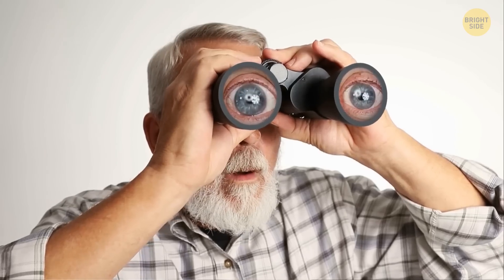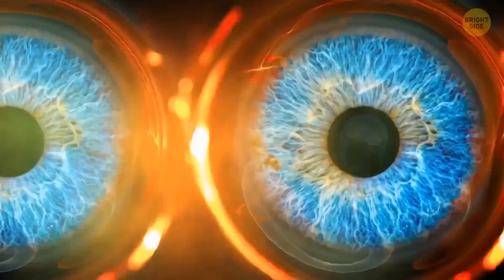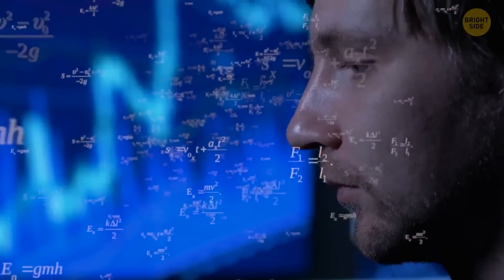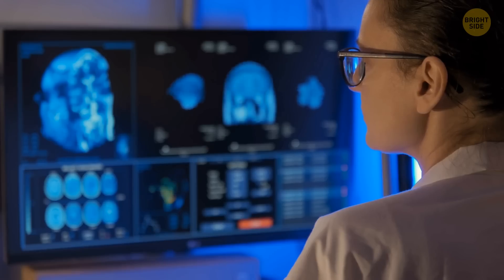They say seeing is believing, but is it really? Optical illusions have a mind-boggling way to trick our brains. They use a combination of color, light, or particular patterns that can make us see things that aren't there. Today, we're taking our brains for a test drive and seeing how these illusions work.